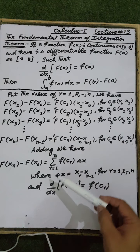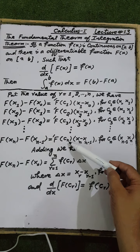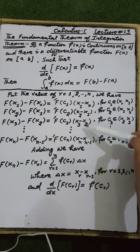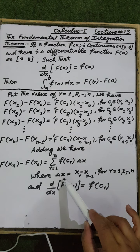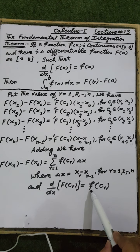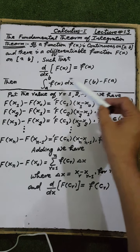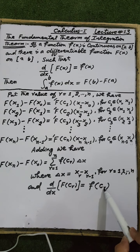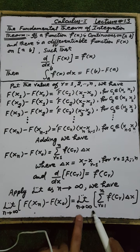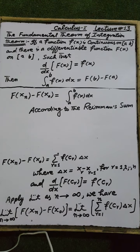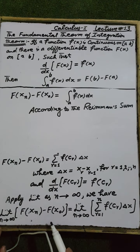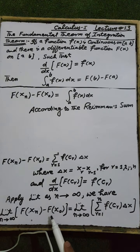Therefore, the result after addition equals F(xₙ) minus F(x₀) equals the summation from r = 1 up to n of f(c_r) Δx, where Δx is the length of each sub-interval, assumed equal in the partition, and F'(c_r) equals the small function f(x) evaluated at c_r. Taking the limit as n approaches infinity on both sides: the limit of F(xₙ) minus F(x₀) equals the limit of the summation from r = 1 to n of f(c_r) Δx. Since F(xₙ) and F(x₀) are constants, the left-hand side remains F(xₙ) minus F(x₀).